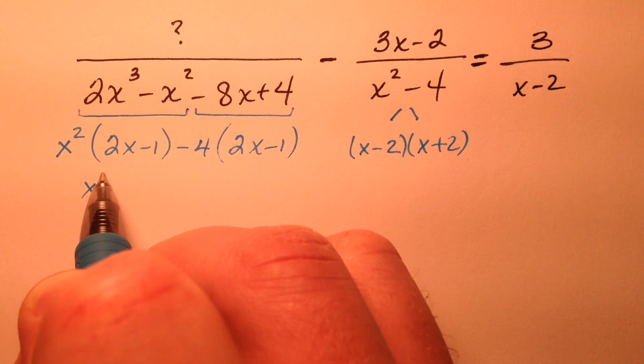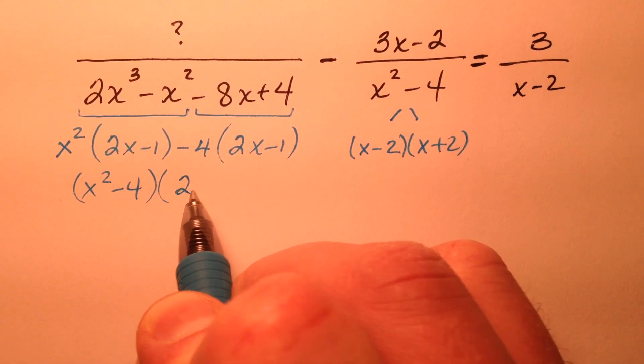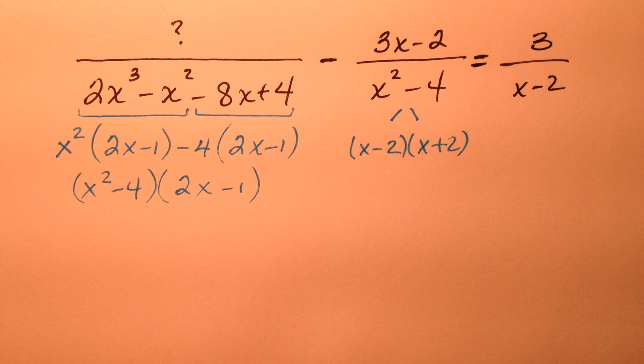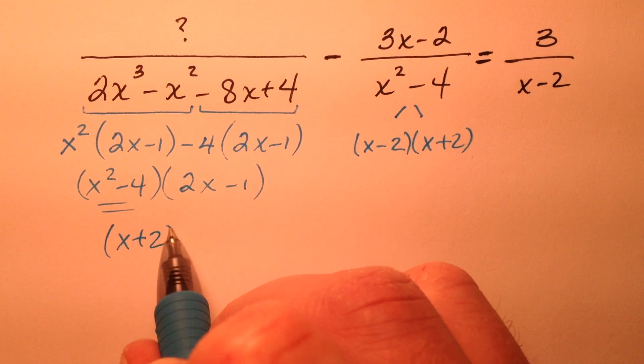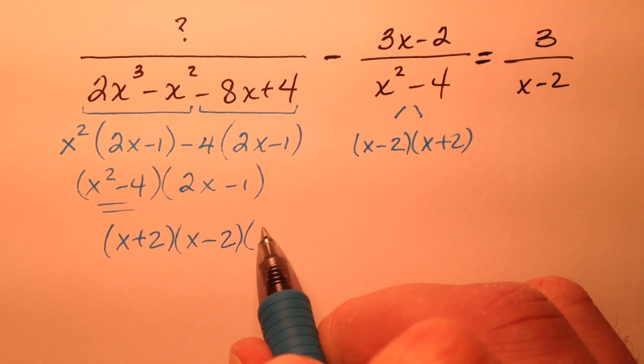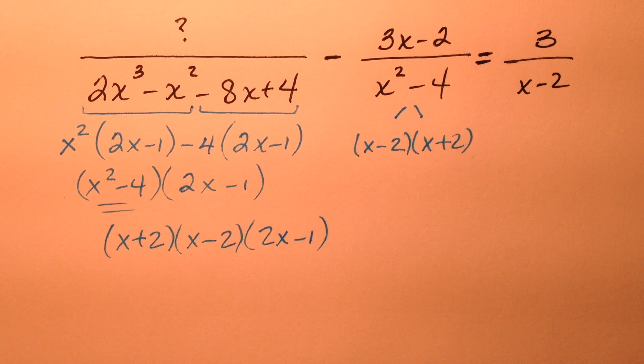So my x squared minus 4 is one of the factors with 2x minus 1, but of course I see here that this is also difference of squares again. So x plus 2, x minus 2, 2x minus 1.